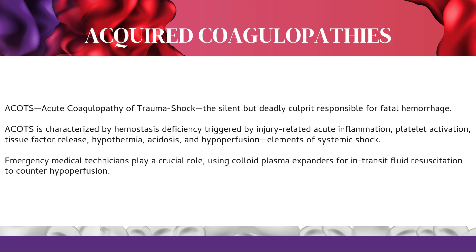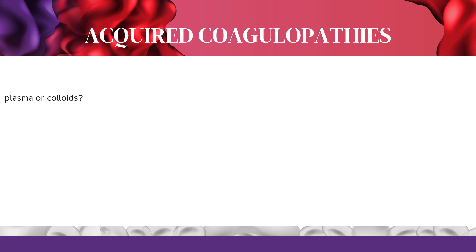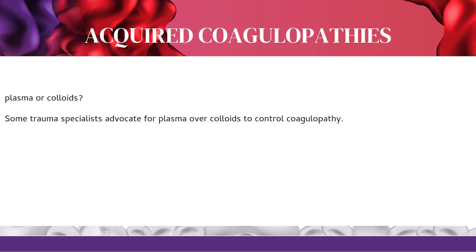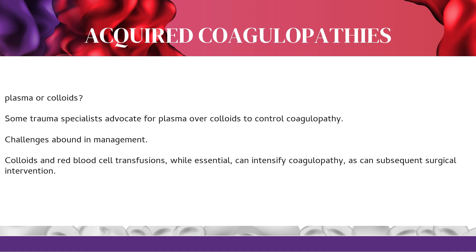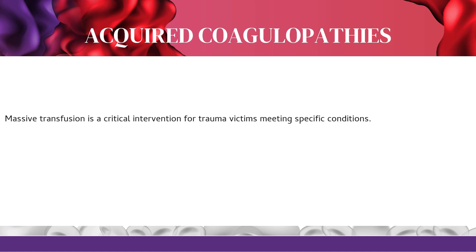Emergency medical technicians play a crucial role, using colloid plasma expanders for in-transit fluid resuscitation to counter hypoperfusion. The debate persists — plasma or colloids? Some trauma specialists advocate for plasma over colloids to control coagulopathy. Colloids and red blood cell transfusions, while essential, can intensify coagulopathy, as can subsequent surgical intervention. Massive transfusion — defined as administering more than 3 RBC units within 1 hour or 8 to 10 units within 24 hours — is a critical intervention for qualifying trauma victims.